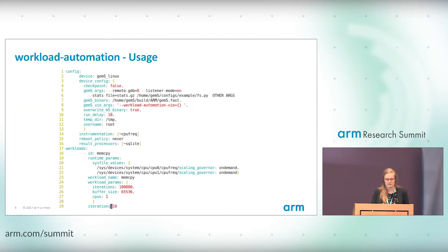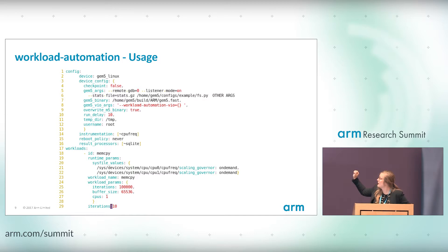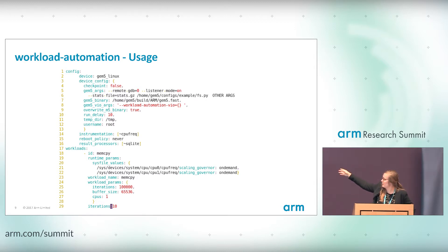Here is an example of an agenda. At the top you have the configuration where you say you want a GEM5 Linux device. You can specify whether you want to start from a checkpoint, give the GEM5 arguments — which are exactly the normal GEM5 command line arguments — specify which GEM5 binary to use, pass arguments for GEM5 virtio, and say whether or not you want to overwrite the default M5 binary on disk. The last part is workloads — that's where you say which workloads to run. In this case, you want to run memcopy. You can give runtime parameters such as governors, and workload parameters — in this case, transferring a 64K buffer 100,000 times.